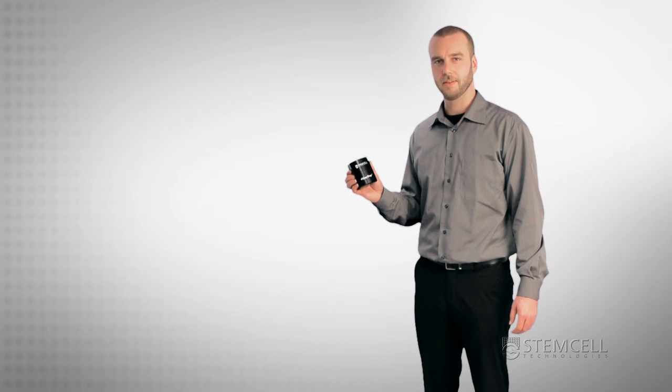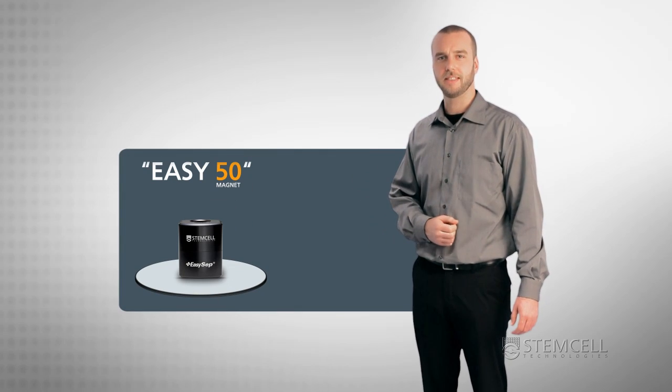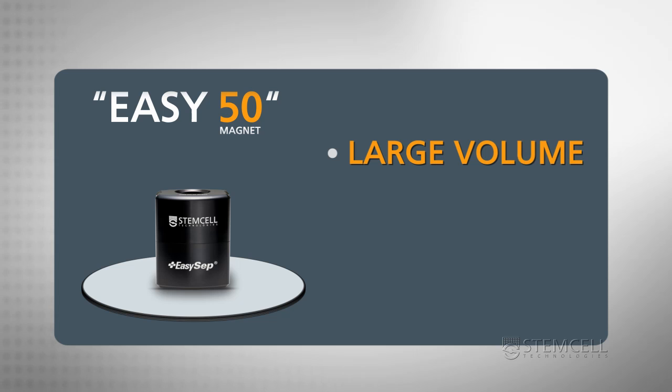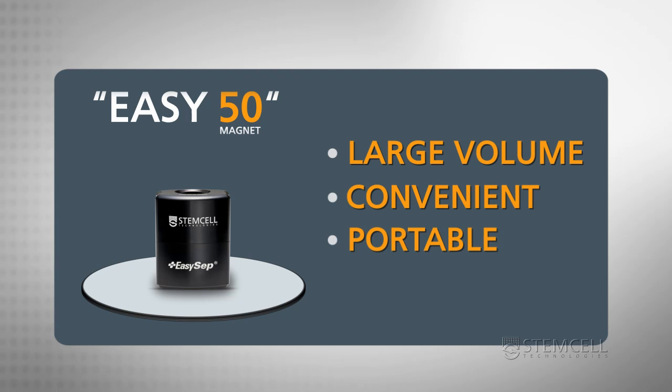Current approaches to large volume separations involve large and cumbersome magnets and columns. The EZ50 magnet is so small it fits in the palm of your hand. EZ50 is easily portable and takes up minimal space inside your hood, giving you the benefits of large volume cell separation without the inconveniences of a large size cell separator.